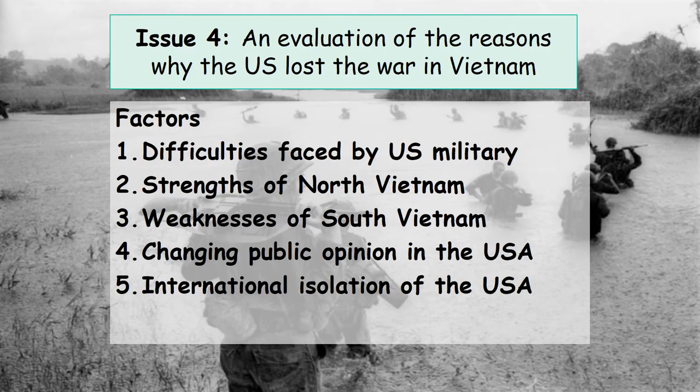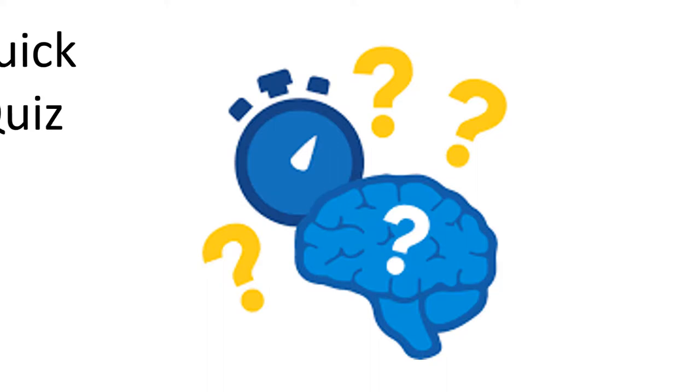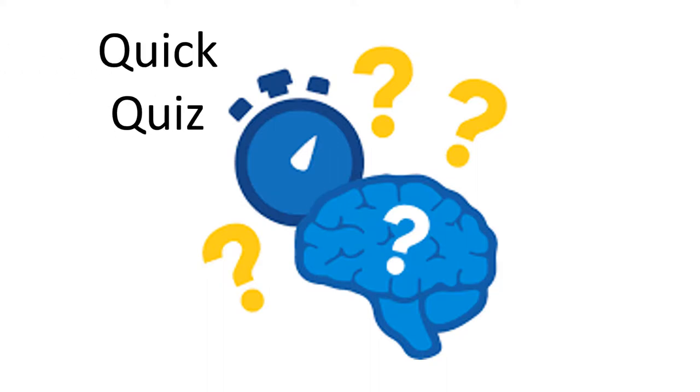The factors we are going to cover in this issue are: why the USA lost the war in Vietnam. We'll focus on difficulties faced by the US military, the strengths of North Vietnam, the weaknesses of South Vietnam, changing public opinion in the USA, and international isolation of the USA. This presentation is going to focus more on background first, then the next presentation will look at each factor in turn. We'll start with a quick quiz to see what you already know.